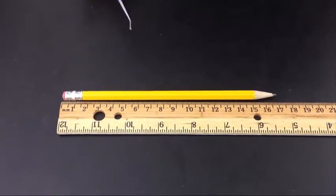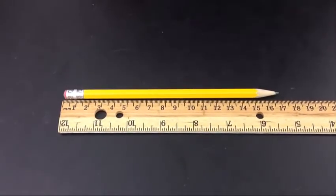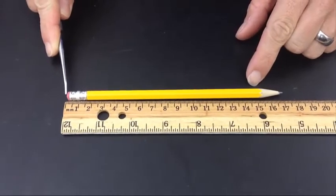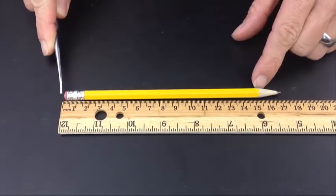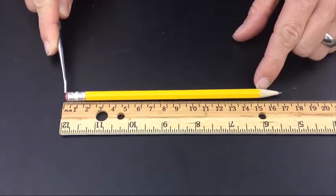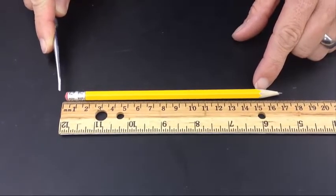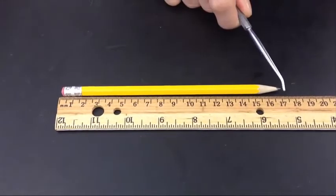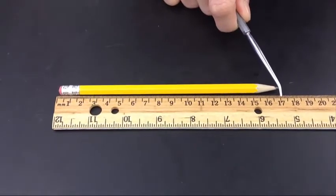Now, when I want to calculate millimeters of an object, I'm going to do the same thing. I'm going to make sure that my object lines up at zero, and I'm going to, again, take note of the last whole number that my object reaches. We are using the same pencil that we did first, so you'll notice that it's 17 centimeters long.